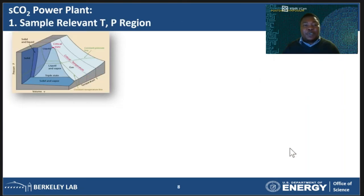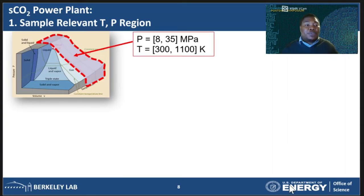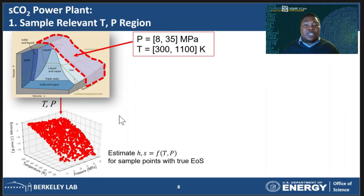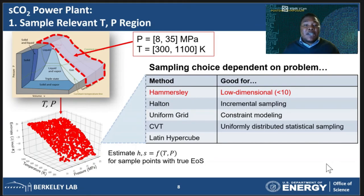To generate surrogate models for the thermodynamic properties, first we need training data from within our region of interest. The PVT diagram shows the behavior of carbon dioxide over the entire temperature-pressure-volume spectrum. However, because we are simulating a supercritical turbine, we are only interested in the supercritical region of the PVT space, which is shown in red here. Our problem is two-dimensional and we know the minimum and maximum temperatures and pressures which can occur within our system, so these define our sampling region. We selected some sampling points from within this region and then evaluated the enthalpy and entropy values using the Span-Wagner equation of state. An example of the model training data we selected for entropy is shown here, with the two input values on the x and y axes and entropy on the z axis. In this example, we have used the Hammersley sampling technique.